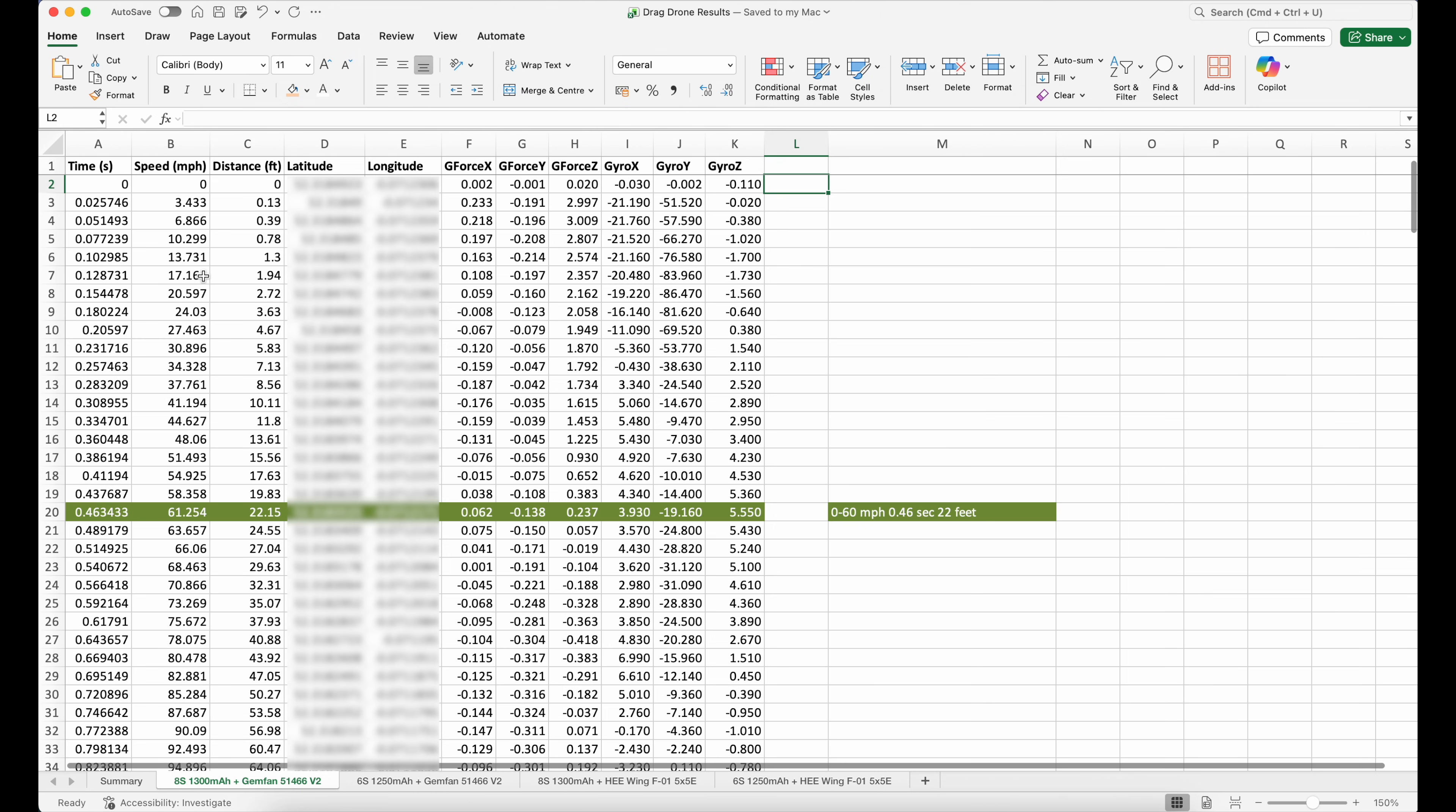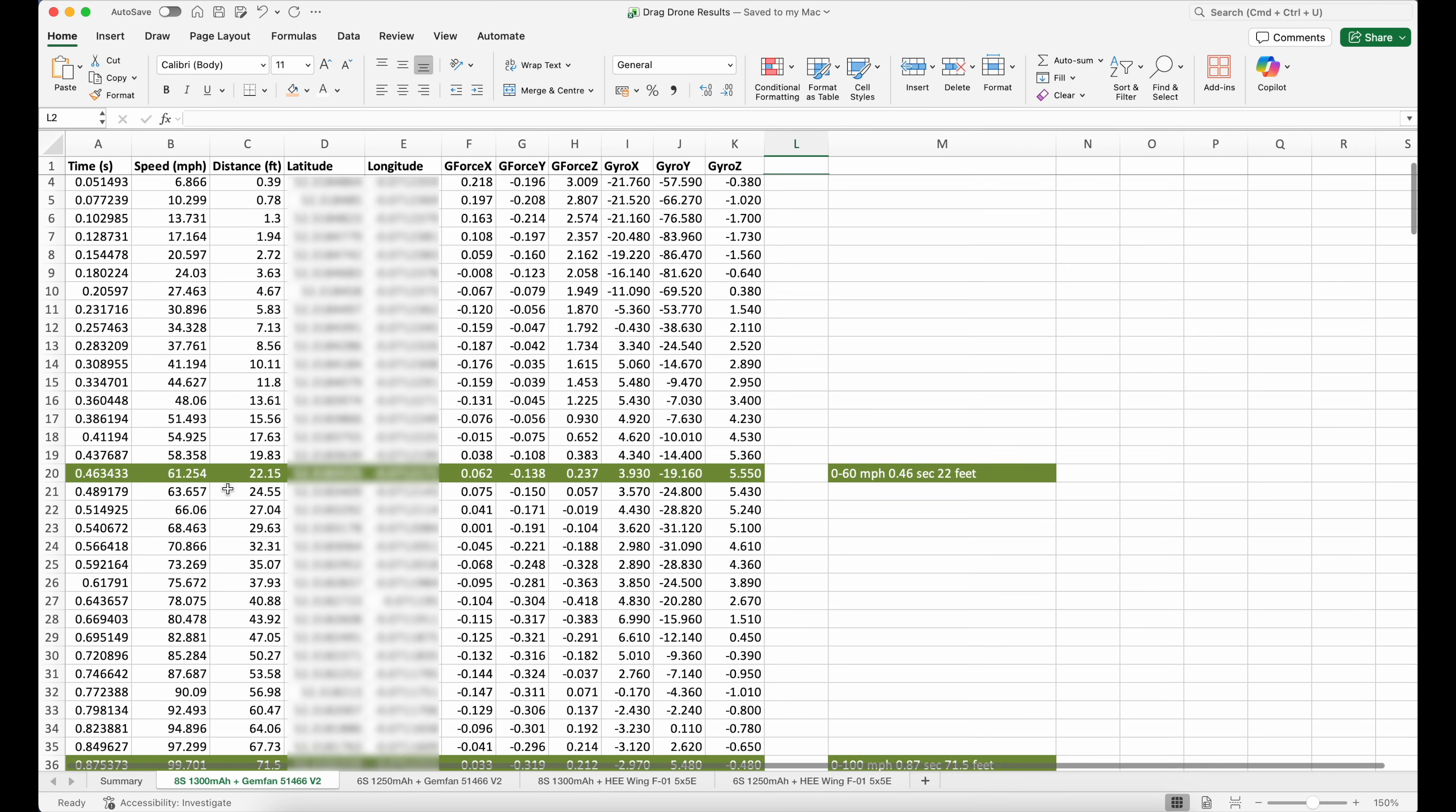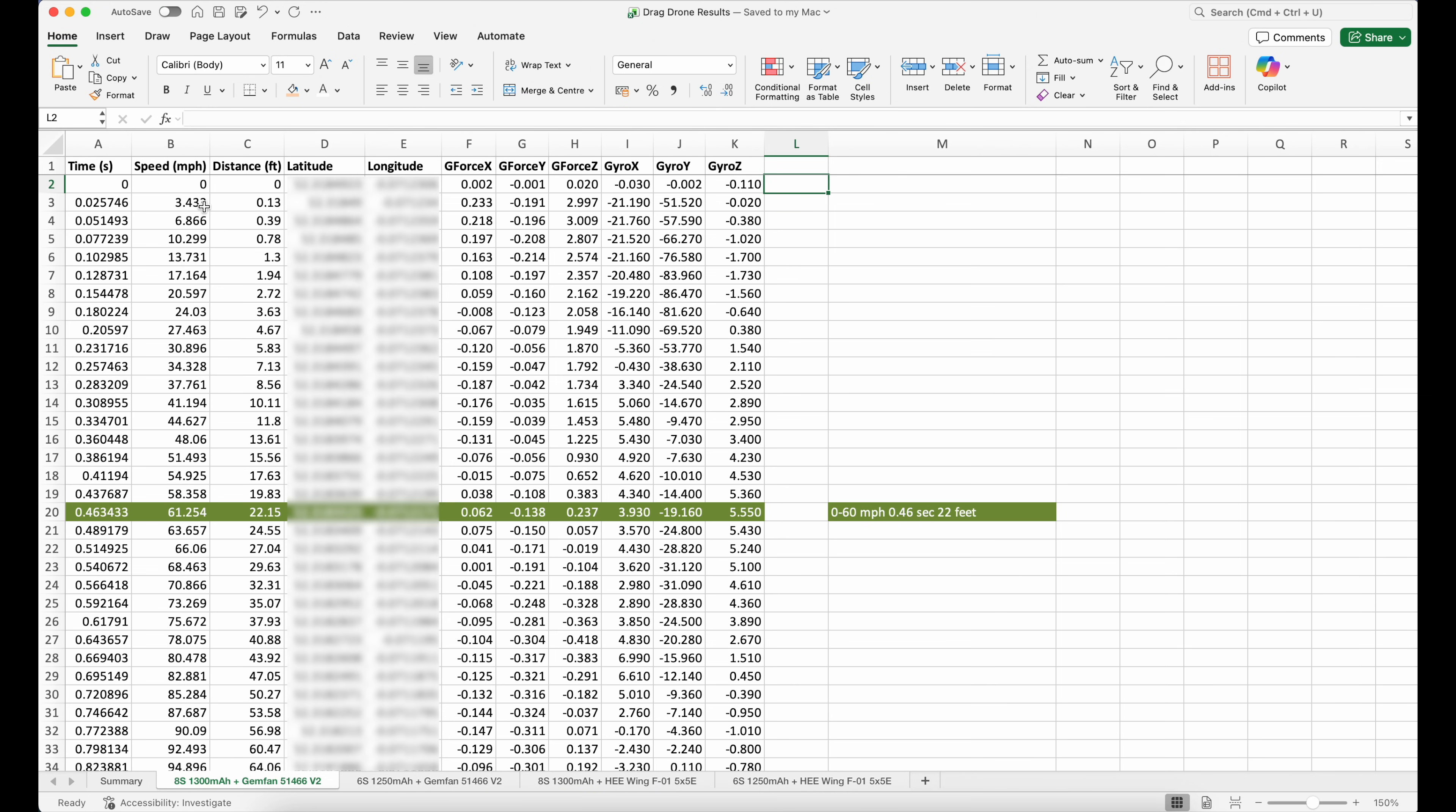So this is the data that's downloaded from the Racebox Pro and there's all sorts of stuff in here but the important thing is time distance and speed. And if we look down through here the things I wanted to know were what was the 0 to 60 time? Well we'll take 0 to 61 because that's over 60. That was 0.463 of a second and it did that in just over 22 feet.